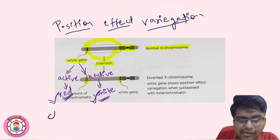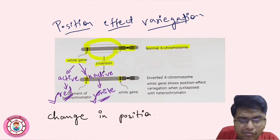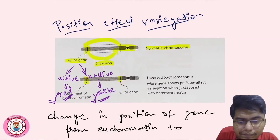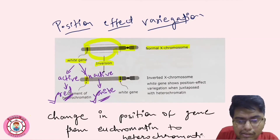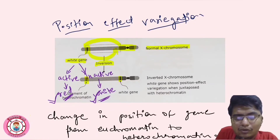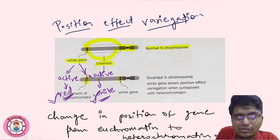What actually happens is a change in the position of the gene from euchromatin to heterochromatin. This is very important. This change from euchromatin to heterochromatin causes inactivation of the gene, and this is known as position effect variegation. We know that euchromatin is a transcriptionally active region, while heterochromatin is relatively inactive. So this is position effect.